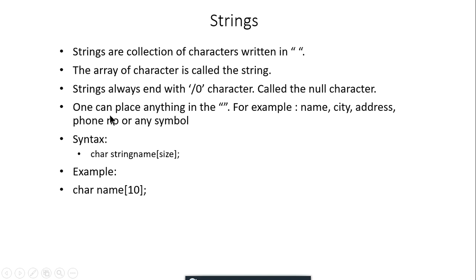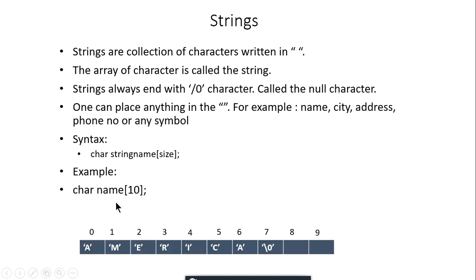You can place anything inside the double quotes — a name, city, address, phone number, symbols, integers, floats — everything is allowed inside a string. To declare a string, you type 'char' as the data type, then a name, and inside square brackets the size of the array. For example, 'char name[20]' creates an array with slots 0 through 19.